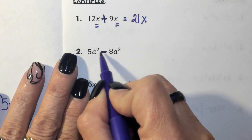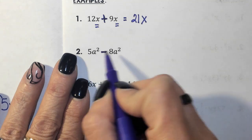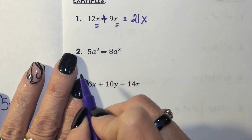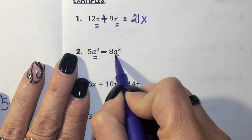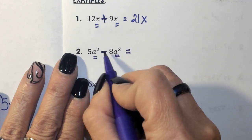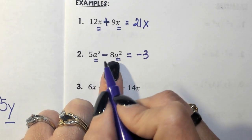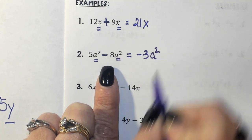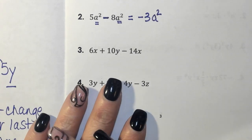Now these guys are separated by a wall — it's a negative wall, but that's okay, it's still separating these two terms. These two monomials are separated by that negative. This is the a squared family and this is the a squared family — they're the same family, so I can put them together. 5 minus 8 is negative 3. The last name is a squared, so you don't change the family's last name.